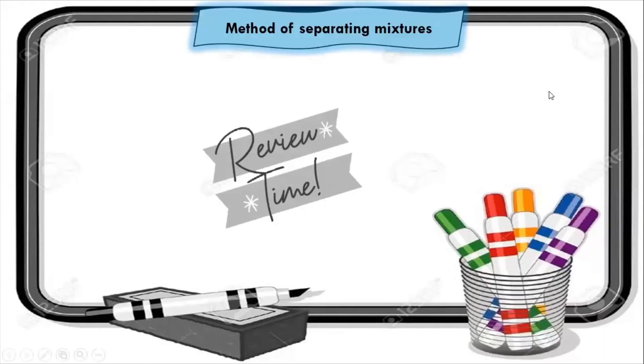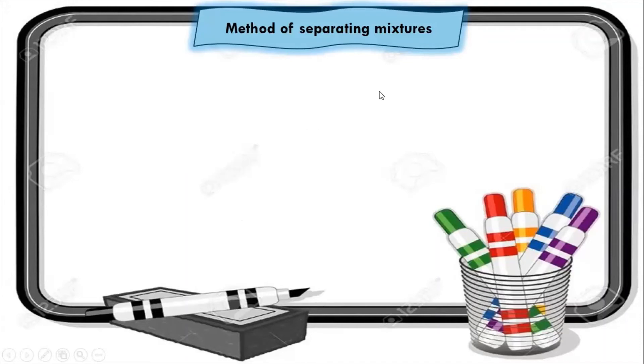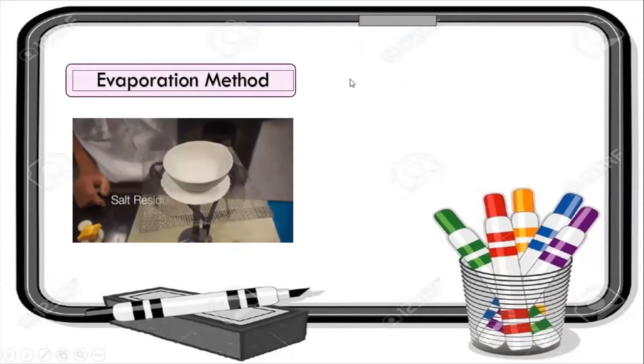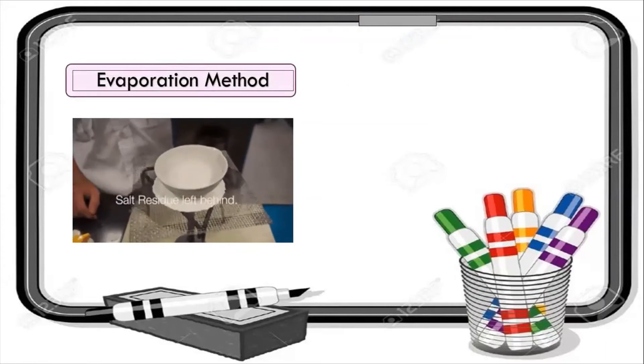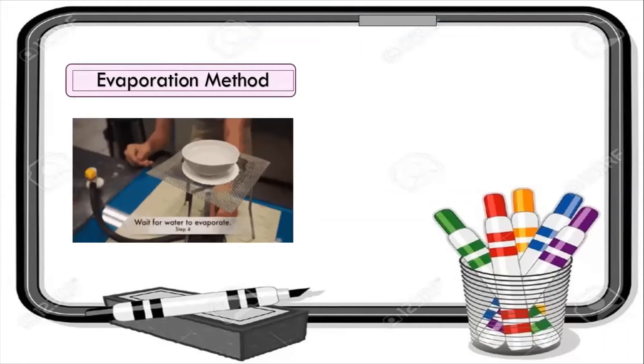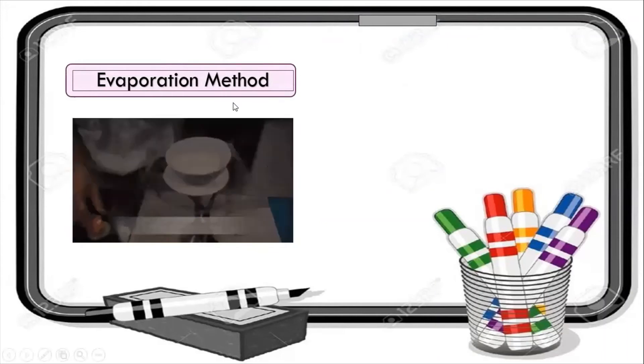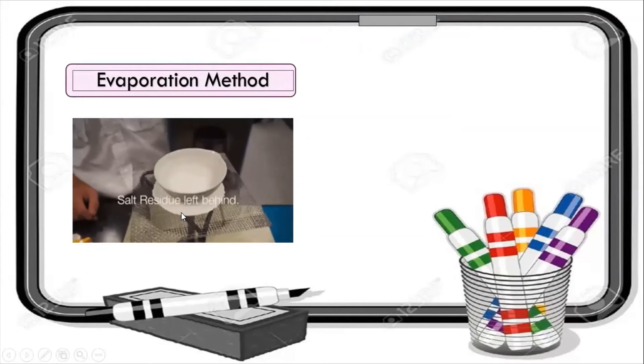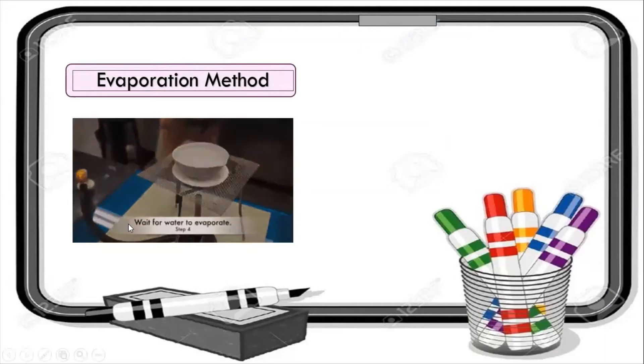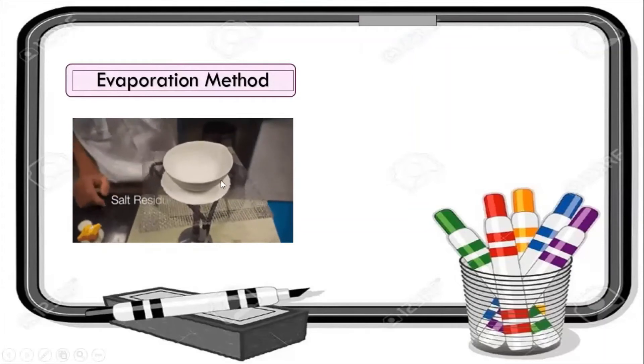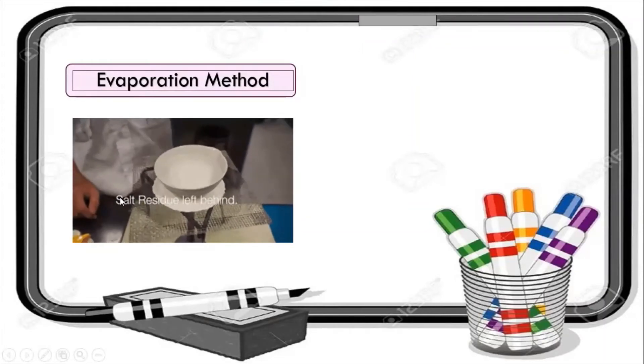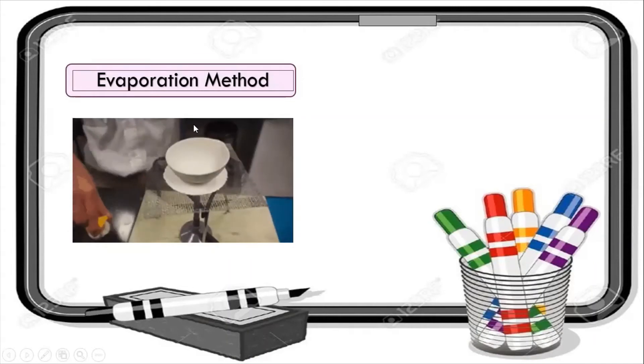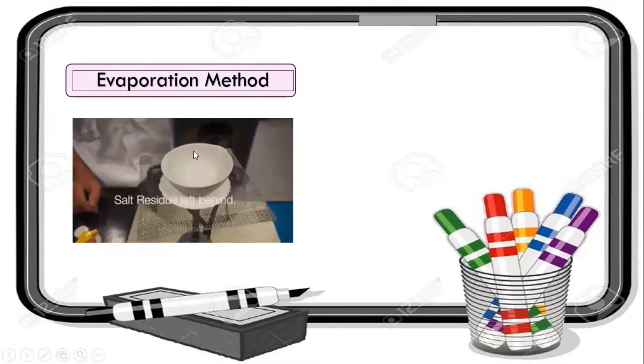Method of separating mixtures. Evaporation method. Evaporation is a tactic used to separate out homogeneous mixture that contains one or more dissolved salts. The method derives the liquid components from the solid components. The process typically involves heating the mixture, making all the water evaporate and salt residue is left behind. So the salt can be separated from water by heating the solution. When we are heating, after some time water starts boiling and all the water will evaporate from the solution and salt will be left behind.